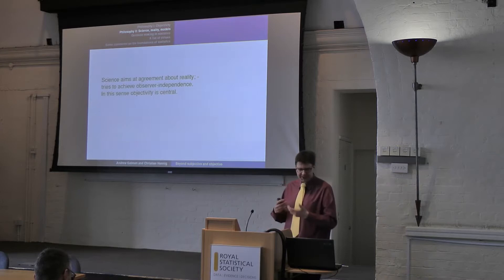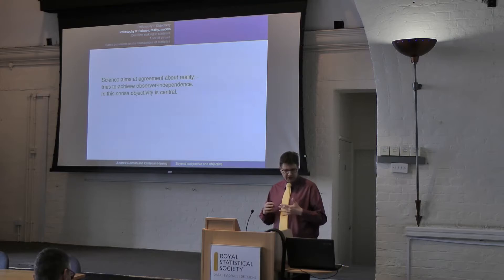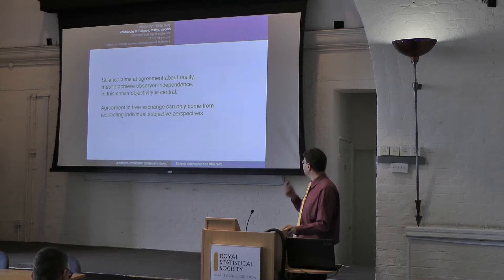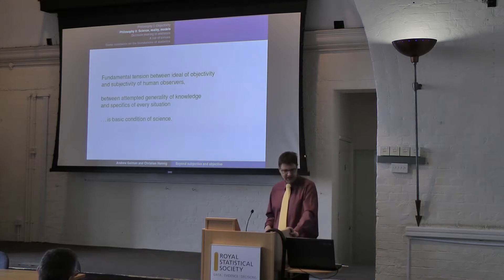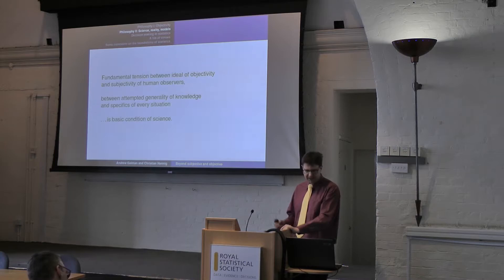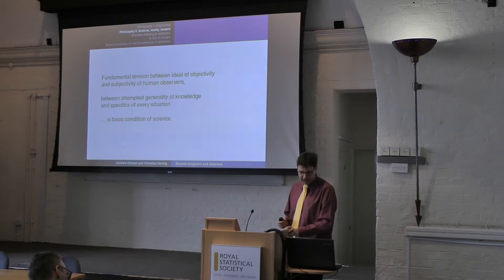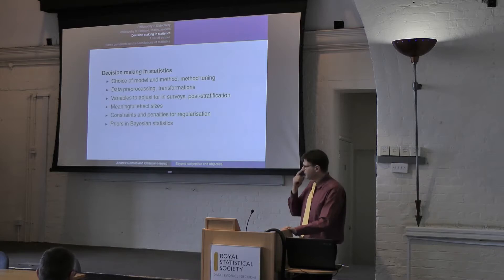Because science aims at agreement about reality and tries to achieve a view independent of individuals, objectivity plays a central role. But agreement and free exchange can only come from respecting individual subjective perspectives and really bringing them to the table. So we really need both. We think that in science there's a fundamental tension between the ideal of objectivity and the necessary subjectivity of human observers, and between the attempted generality of knowledge and the specifics of every situation. We always have to fight with balancing these poles.